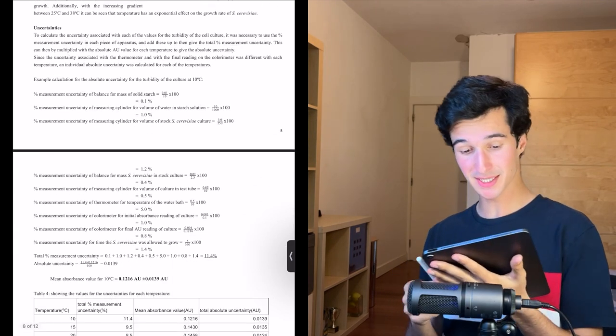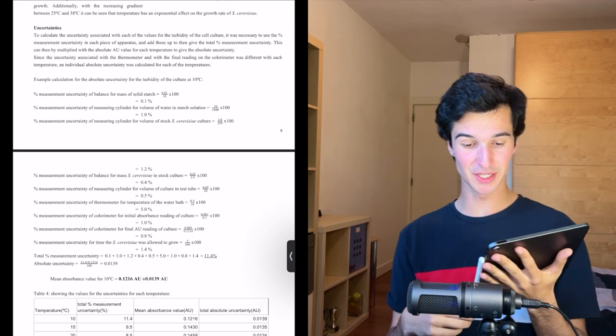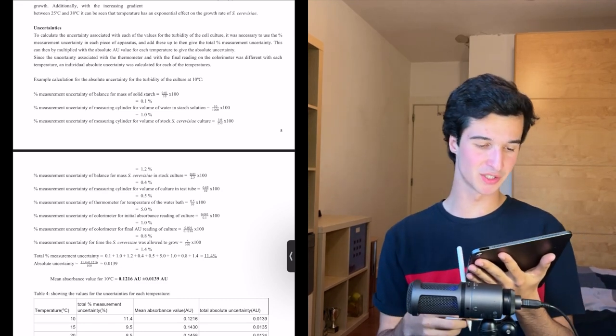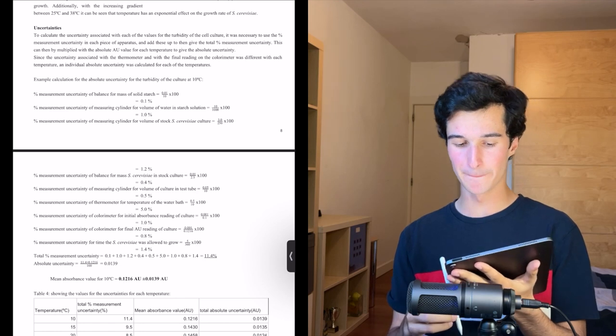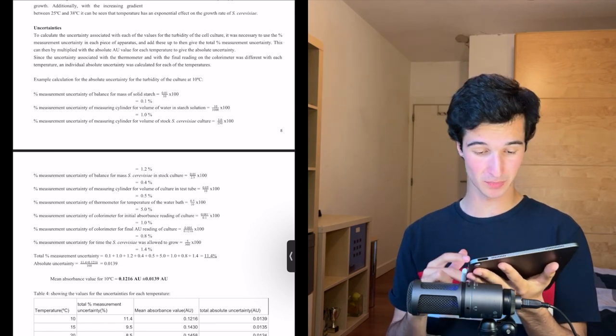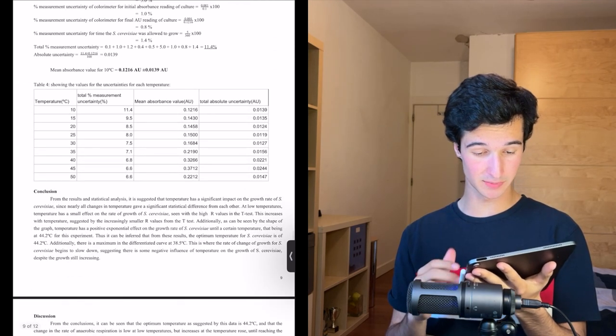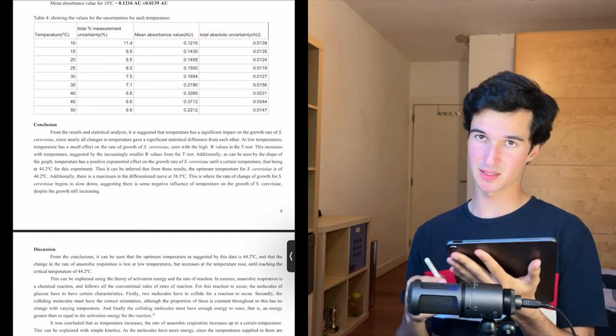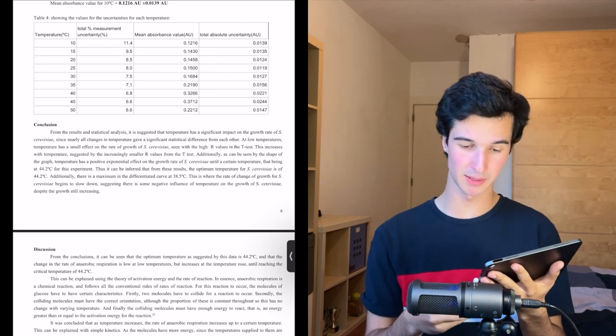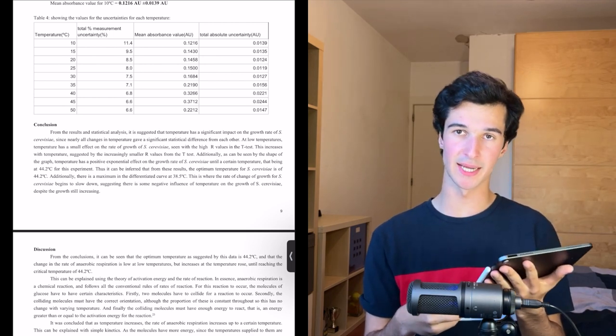Uncertainties. To calculate the uncertainty associated with each of the values, necessary to use the percentage measurement uncertainty in each piece of apparatus, and to add these up to then give the total percentage measurement uncertainty. Cool. So I've got the uncertainty, blah, blah, blah. And I have absolute uncertainty. This is something I learned from chemistry, really, but you can apply it to any IA.